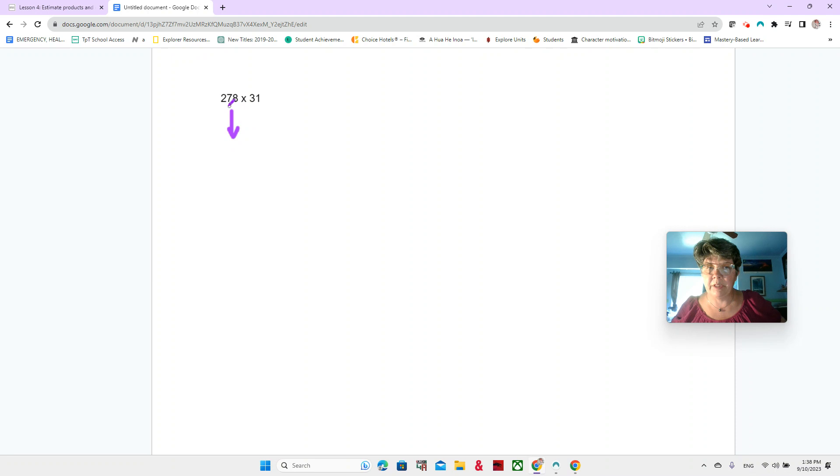Same thing that we're thinking about before. We can round 278. So we could round it to the nearest hundred. If we look at the seven, the seven tells the two next door that it's going to go up to 300 because seven is above five and closer to 300 than it is to 200. And then we could also round this to the nearest 10.